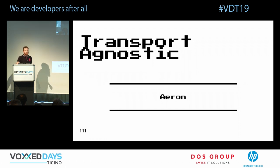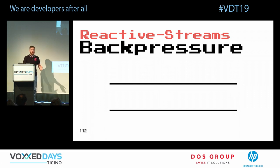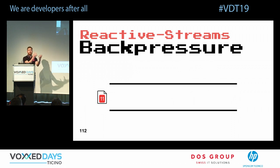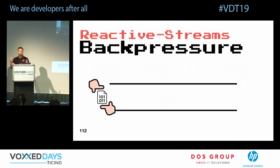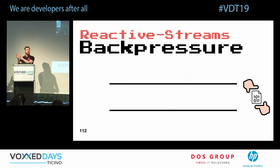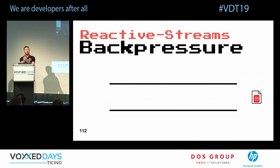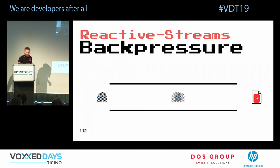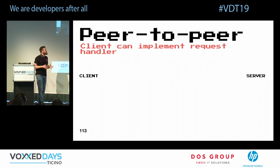As an implementation of reactive streams, RSocket has real back pressure propagation. There's a frame for sending request-N: your Java `subscription.request(10)` gets converted to a binary frame, sent over the network, and on the other side the library converts it back to a request-N invocation on your producer — which produces exactly the number of messages requested over the network.